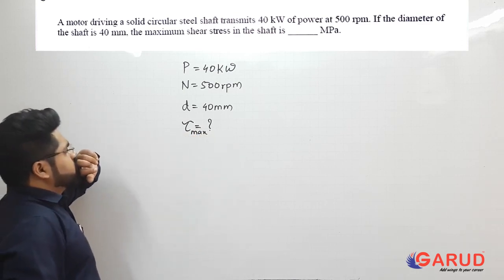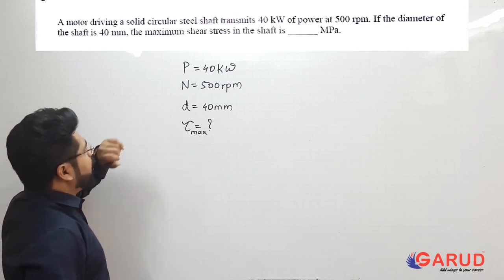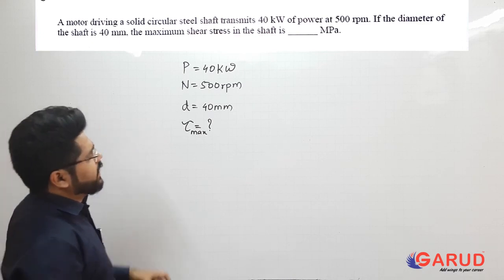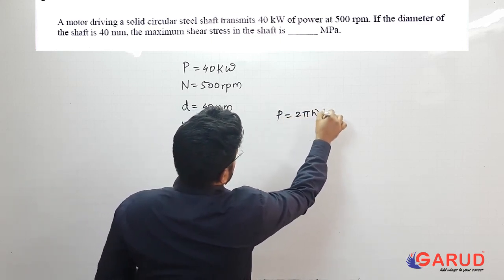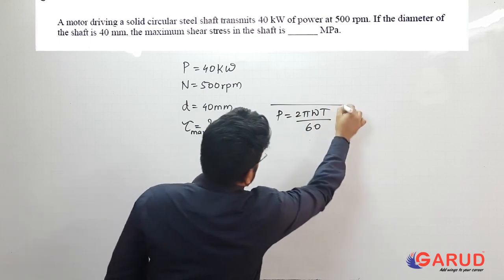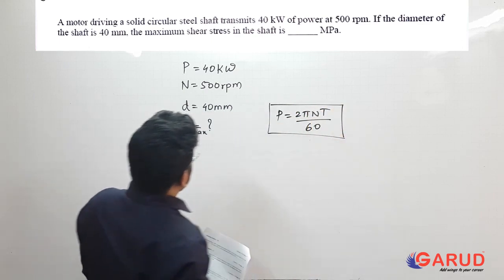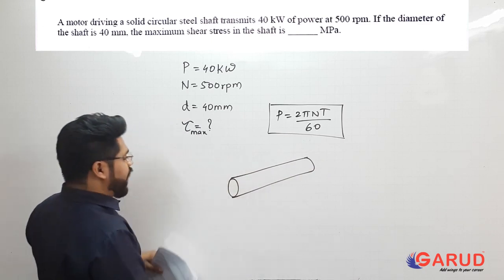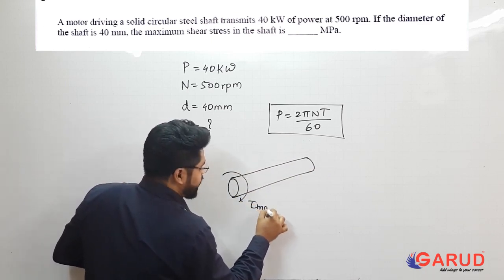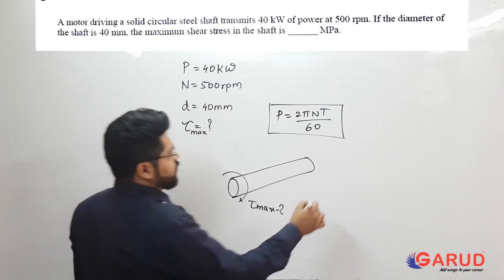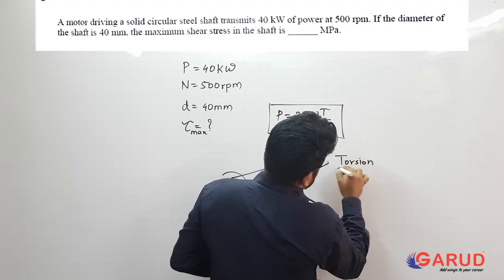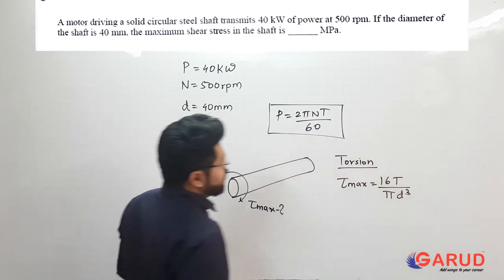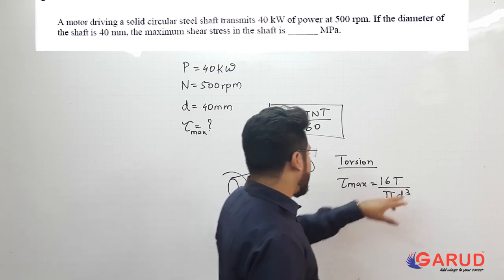Let's recollect the formulas. What can I say about the power? Power can be written as P = 2πNT/60. Now for the shaft, in torsion we also have the formula that tau max is equal to 16T upon πD³. You might have gone through this formula: tau max = 16T / (πD³).